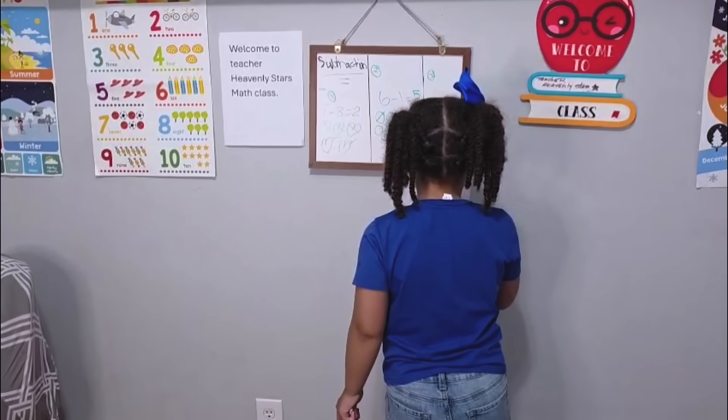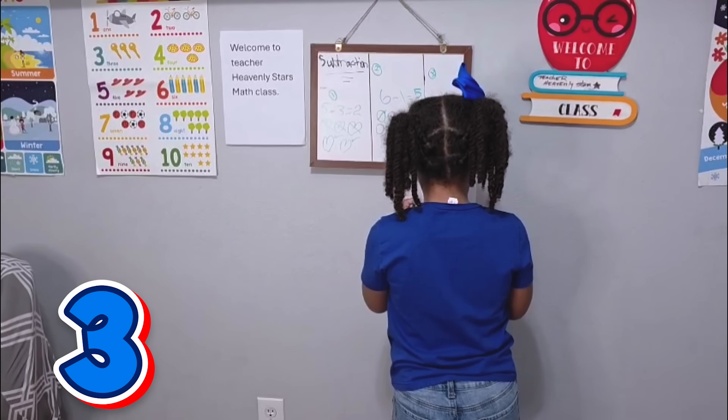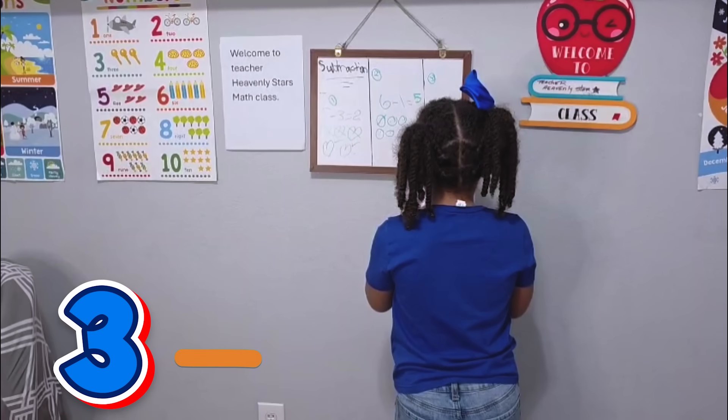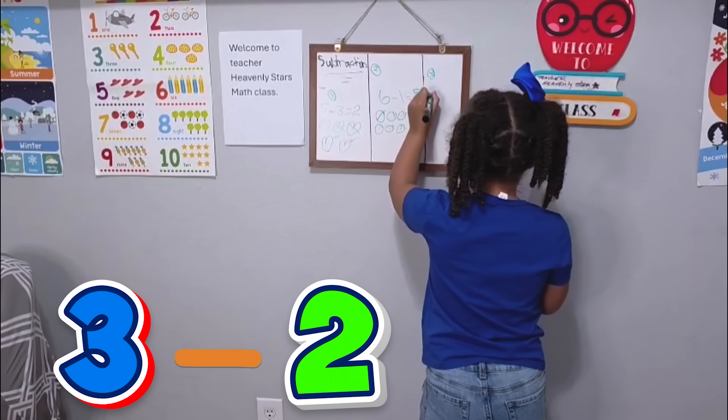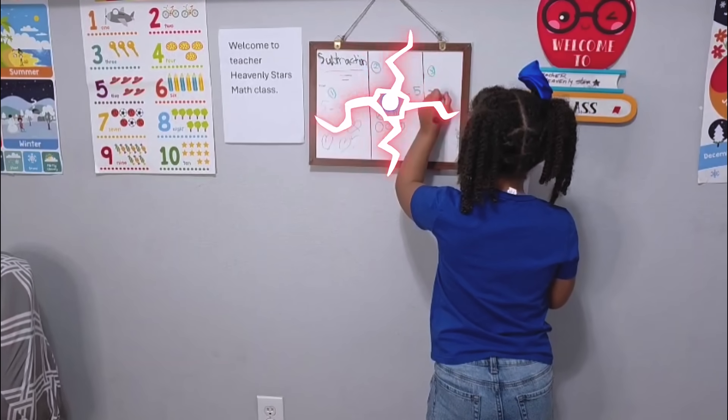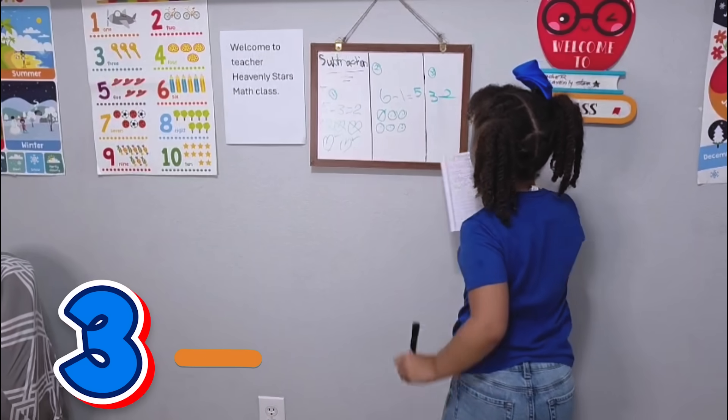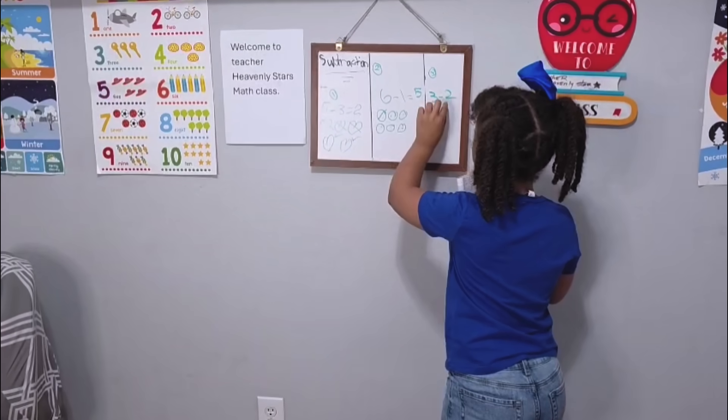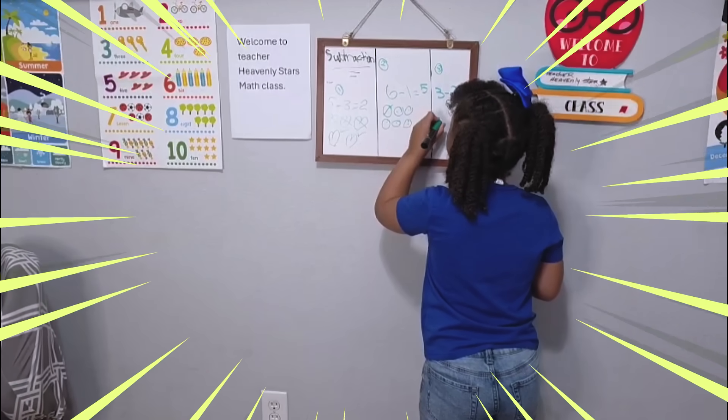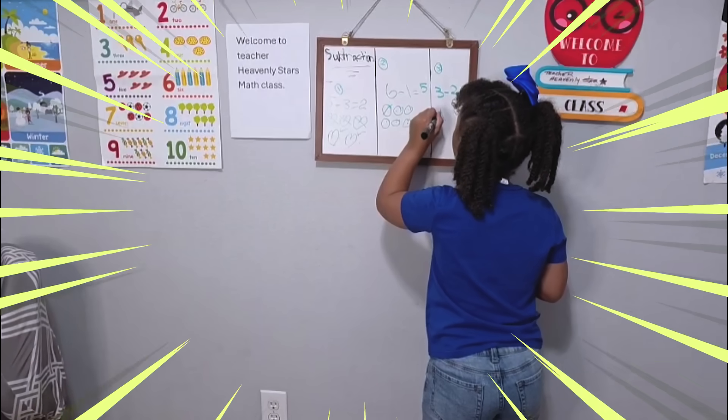It's gonna be three minus two. Okay, so we have three triangles.